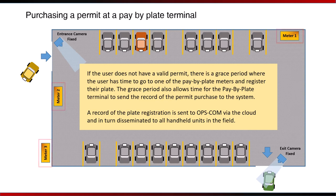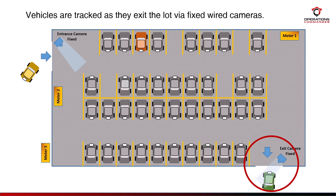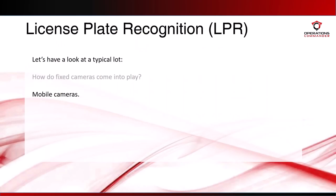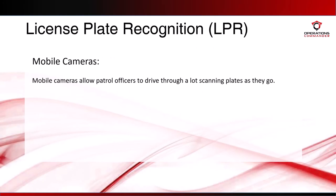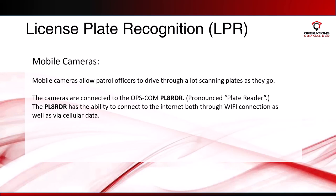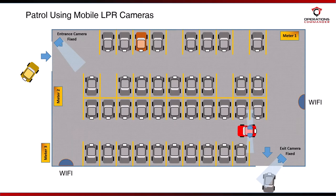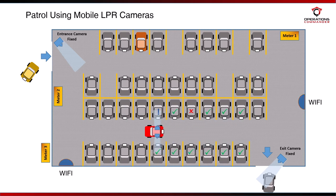Let's have a look at how mobile works. Mobile cameras allow patrol officers to drive through the lot scanning plates as they go. The cameras are connected to the Opscom plate reader, which has the ability to connect to the internet both through Wi-Fi connection as well as via cellular data. Here we see a vehicle equipped with mobile cameras driving through the lot scanning and chalking plates as it goes. An audio signal will sound to indicate valid permit holders, non-valid vehicles, as well as questionable reads based on the plate number being scanned. This information is sent to the Opscom system through cellular data or Wi-Fi hotspots positioned throughout the lot.